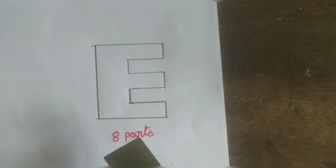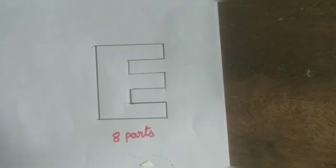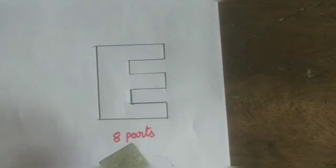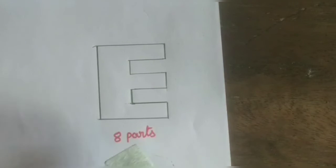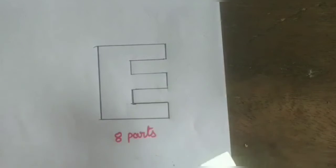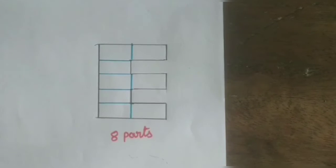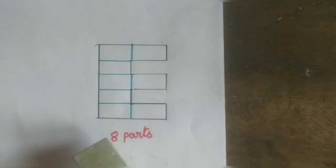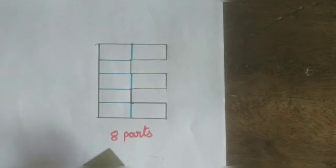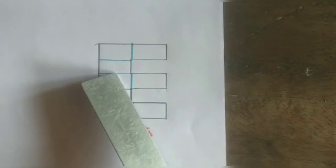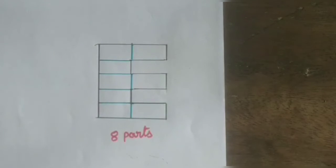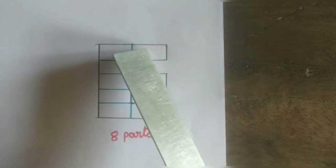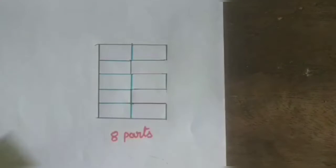Fourth one: this is the letter E. We have to draw lines to make this letter into eight equal parts. We have to draw seven small lines to make this figure into eight equal parts — one, two, three, four, five, six, seven lines — giving eight equal parts.